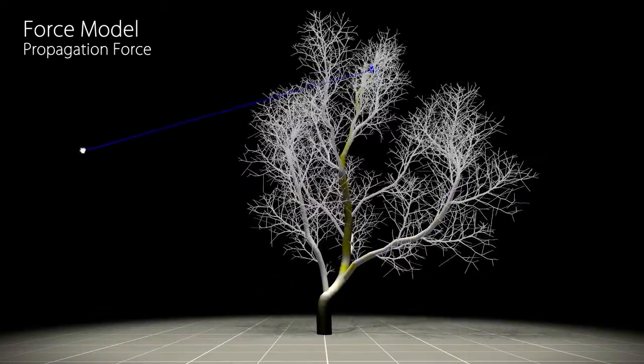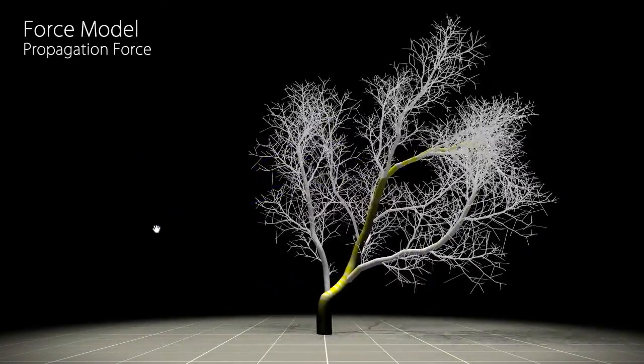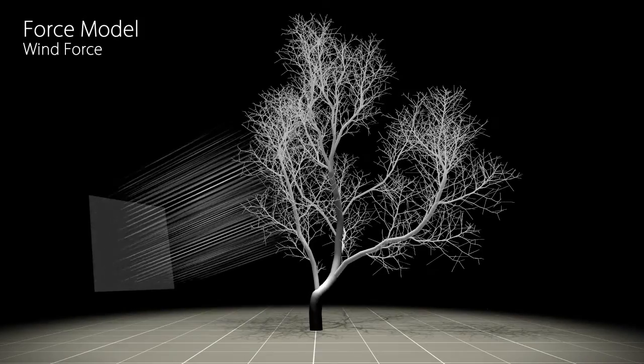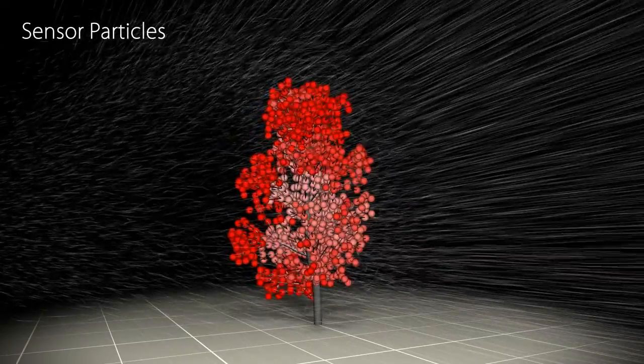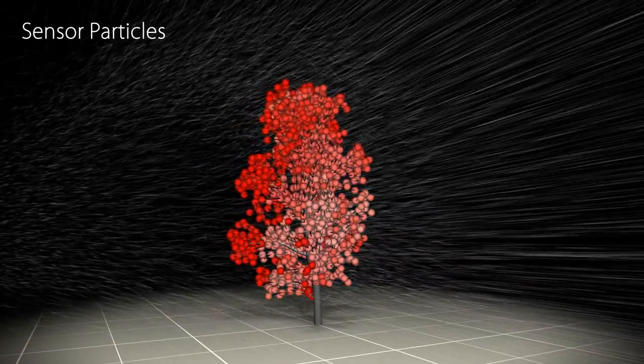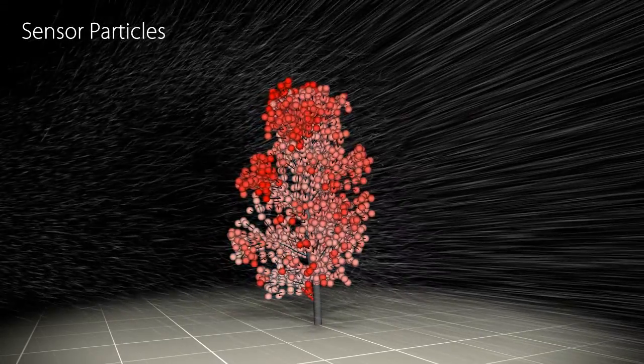The tree model reacts to forces manually applied by the user as well as to forces caused by dynamically changing wind fields in our system. We couple the wind simulation with the tree model by distributing sensor particles to the branching structure.